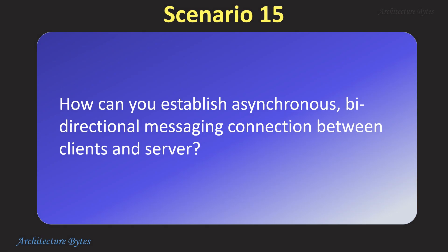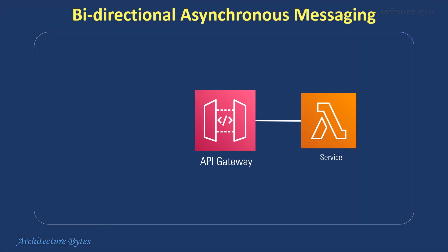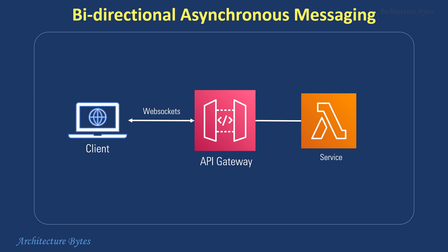How can you establish asynchronous bi-directional messaging connections between clients and server? WebSockets with API Gateway provides real-time two-way communication between web clients and back-end services on AWS. This establishes a full-duplex persistent connection allowing bi-directional data flow, unlike traditional HTTP requests. API Gateway routes incoming WebSocket messages to appropriate backend services like Lambda functions. This setup is ideal for scenarios requiring live updates like chat apps or collaborative editing.